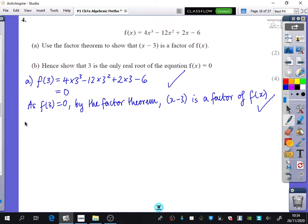So part B of the question. I'll give you a chance just to finish writing that bit down. But think to yourself, it says, hence, show that 3 is the only real root of the equation f of x equals 0.